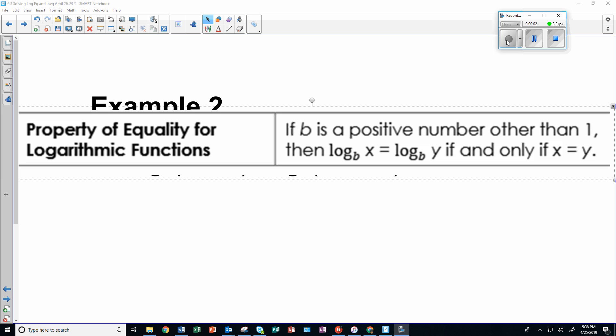Now we come to example number two. Remember the property of equality for logarithmic functions. If B is a positive number other than one, then log base B of x equals log base B of y with the same base means the arguments must be equal. So x has to equal y, where x and y are the arguments of the logs.